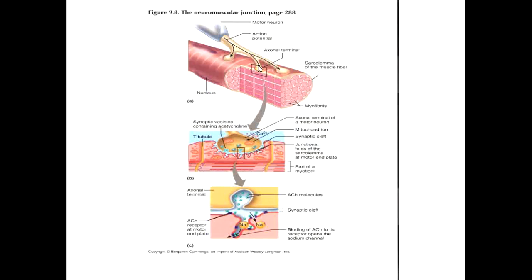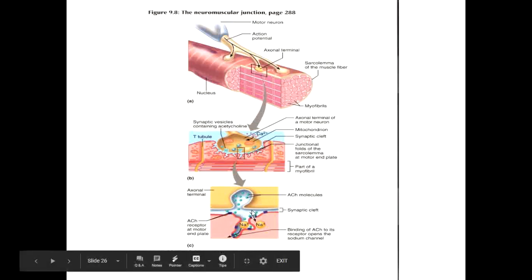Looking at that picture again: the arrow goes down, it hits the synapse — this little space right here — and those little blue dots are our acetylcholine. The acetylcholine is released, and when it releases, it triggers these little channels to allow sodium to go in.